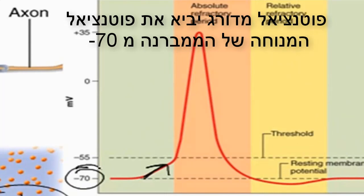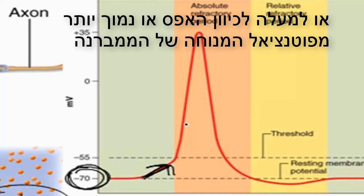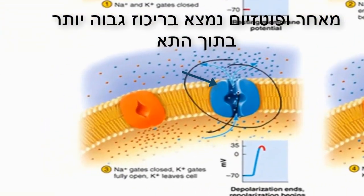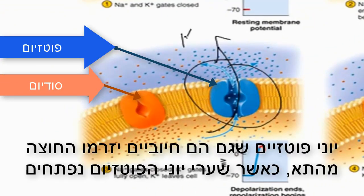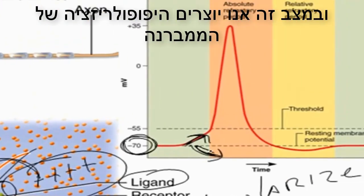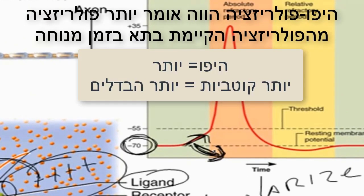Graded potentials will bring the resting membrane potential from minus 70 either up towards zero, or actually lower than resting membrane potential — further from zero. Sometimes you open up potassium ion channels, and since potassium is in higher concentration inside the cell, potassium ions, which are also positive, leave the cell when a potassium ion channel is opened. This takes positives out of the negative situation, making it even more negative. In that situation, we hyperpolarize the membrane — making it even more polar than it was at rest.